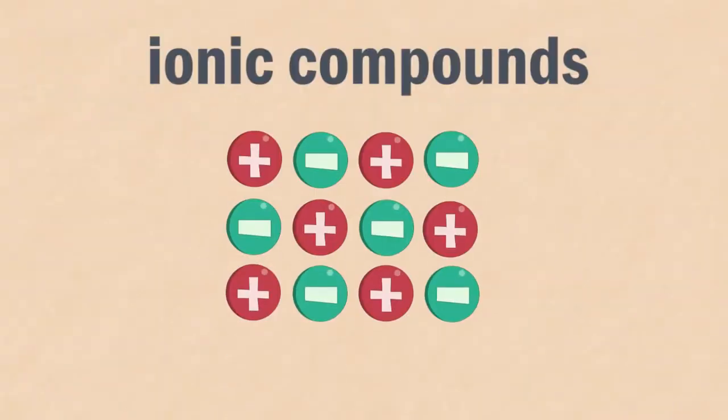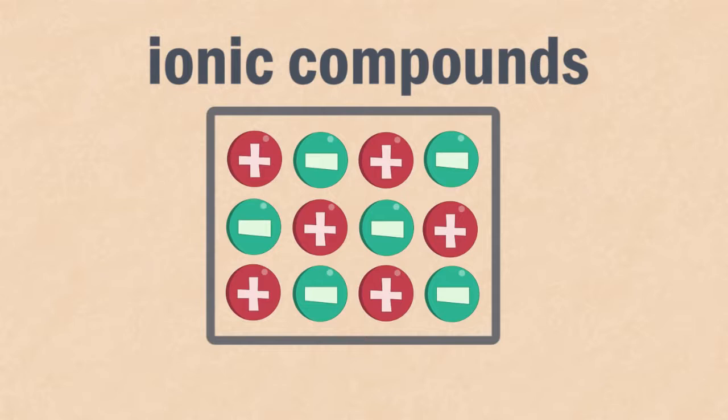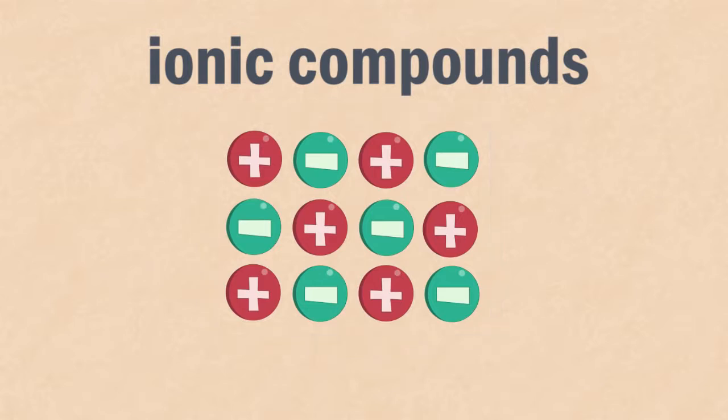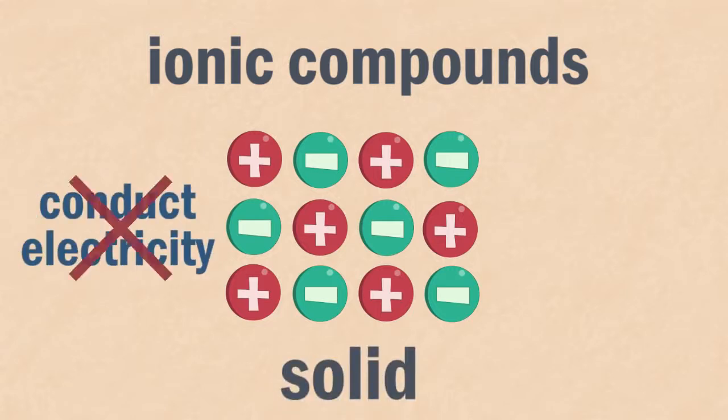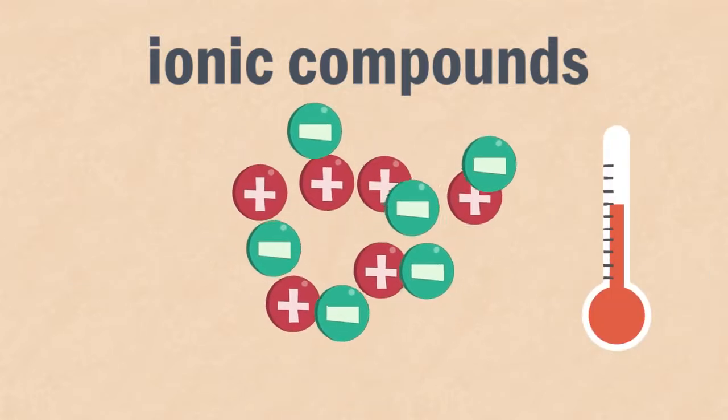Ionic compounds are formed by the strong electrostatic bonds between positive and negative ions. The oppositely charged ions are locked into a rigid and regular structure and since the ions are fixed in position and aren't free moving, an ionic solid cannot conduct electricity or undergo electrolysis. But one way of making it conduct is to heat it until it melts.